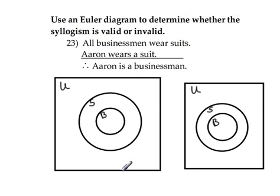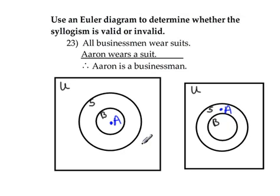The second premise says that Aaron wears a suit. So for Aaron to be inside the circle of those people who wear suits, I could place him inside the businessmen circle, or I could also place him outside of it. You want to make sure as you're drawing an Euler diagram that you come up with all the different ways you could possibly draw those two premises, because we're looking to see whether the conclusion necessarily follows.